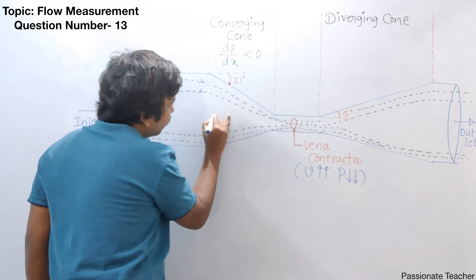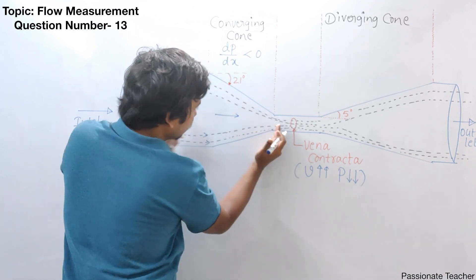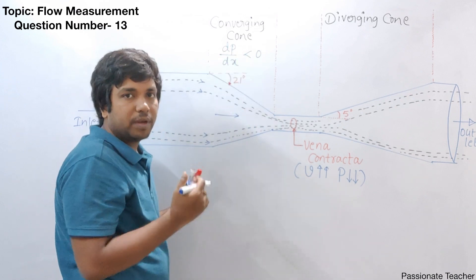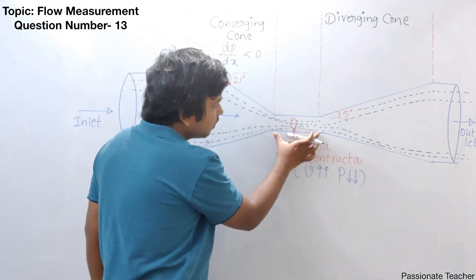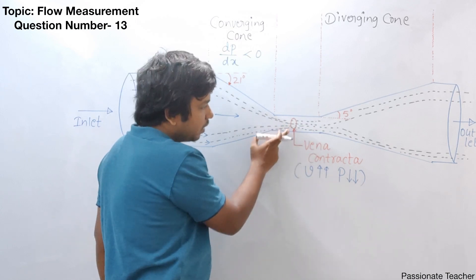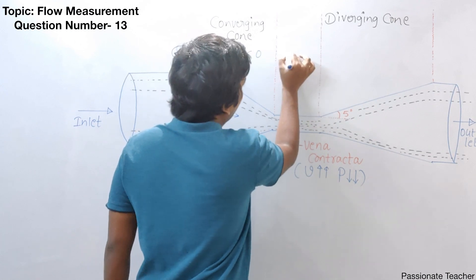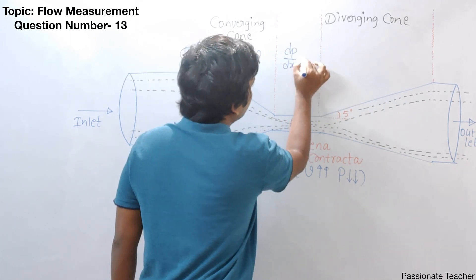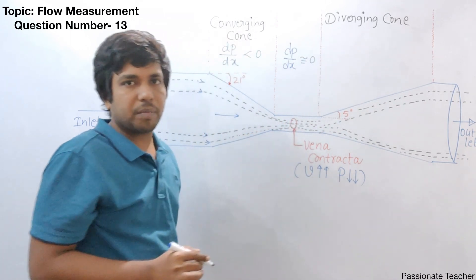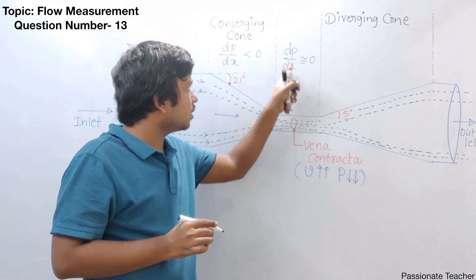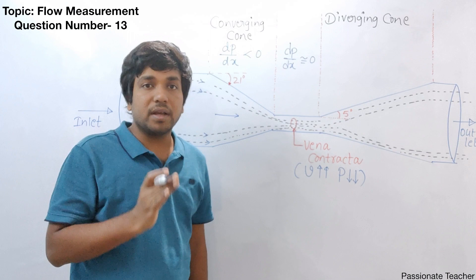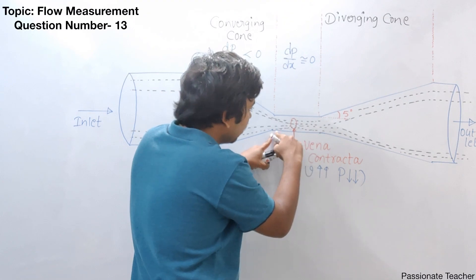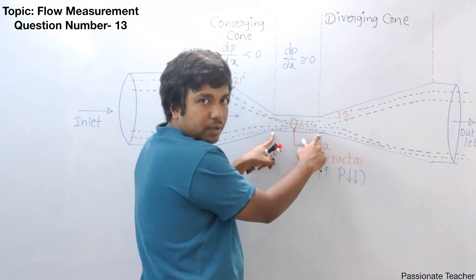The length of the vena contracta region is very less, and during this zone we will almost see that dp/dx — the pressure gradient — is almost equal to zero. It won't be exactly equal to zero practically, but for mathematical convenience we take the pressure gradient as almost zero.